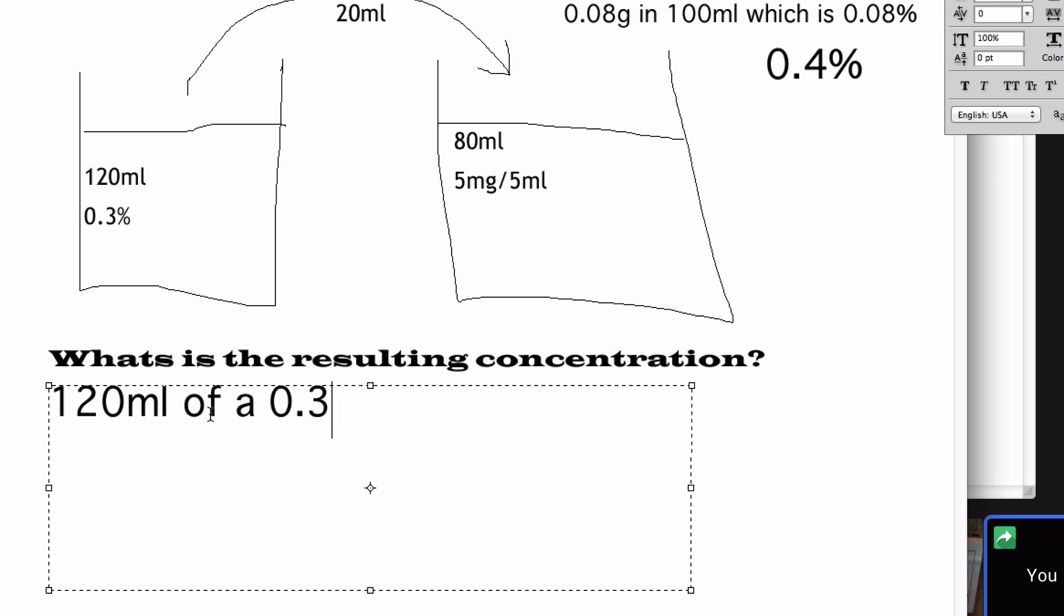So 0.3% means you have 0.3 grams in 100 mils. Okay, so you've got 0.3 divided by 100 times 120. So, 0.36 grams. So it's 0.36 grams in 120 mils.